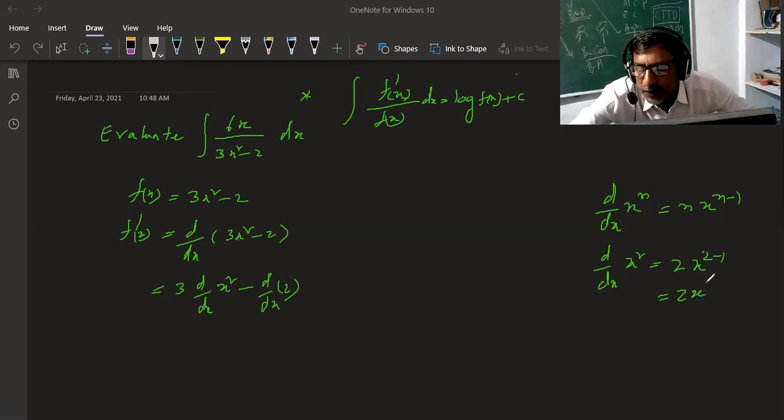So here, 3 into the derivative of x square is 2x. The constant derivative is 0, so that equals 3 times 2x, which is 6x. So f dash x is 6x.